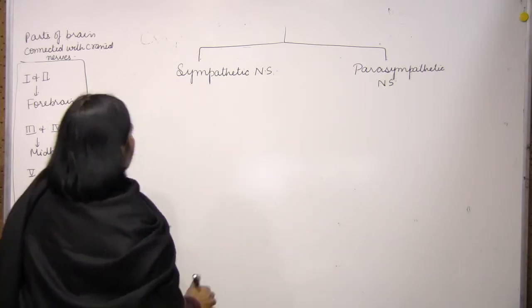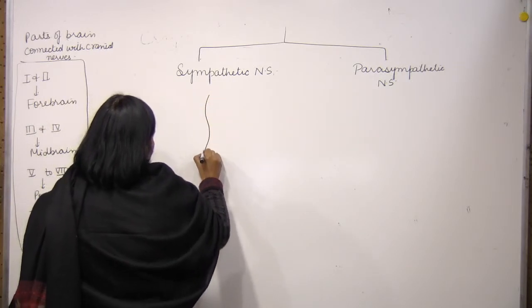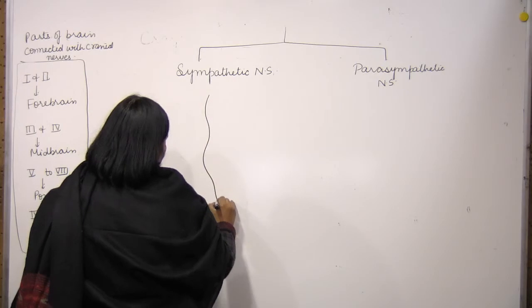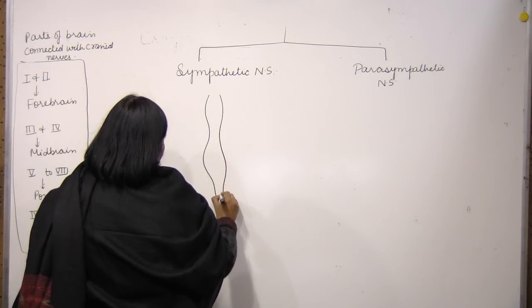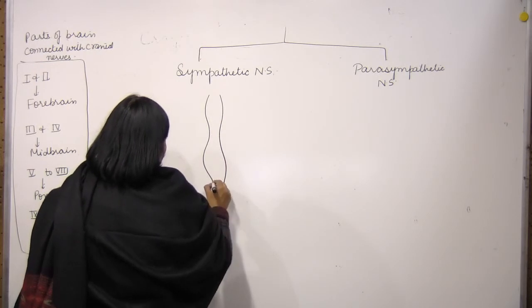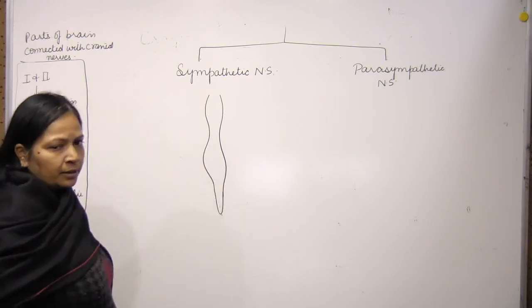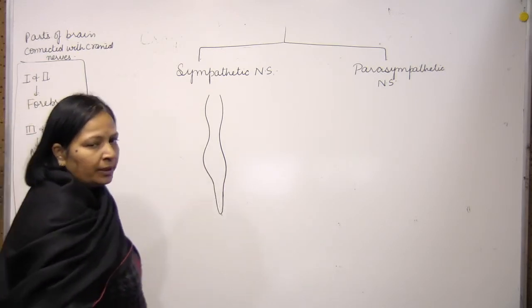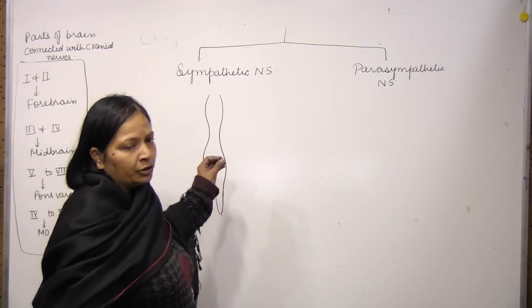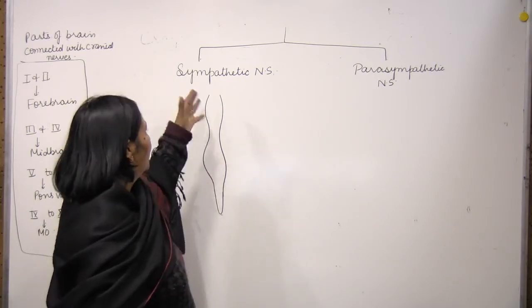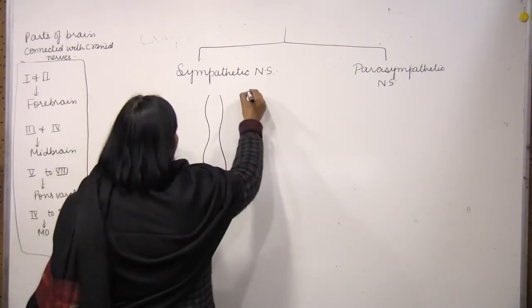Okay, let's see here. This is the spinal cord. I told you that some spinal nerve branches are part of the Autonomic Nervous System.